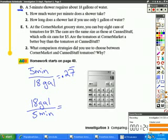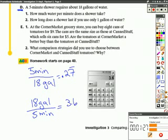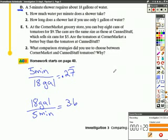18 divided by 5 equals 3.6. And 0.27, that represents 0.27 minutes per gallon. And this equals 3.6 gallons per minute.